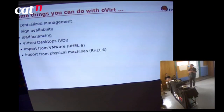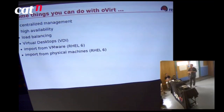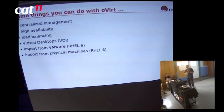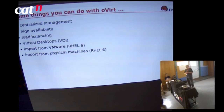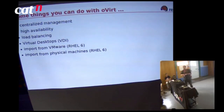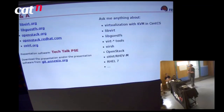Some things you can do with oVirt — we open-sourced it a couple of years ago, it used to be called REVM, then Kumra, and the upstream project is now called oVirt. This is about centralised management, more similar to vSphere or VirtualCenter. Its main focus is virtual desktops. In RHEL 6 and CentOS 6, you can import from ESX directly into oVirt and convert physical machines into virtual machines running on oVirt.